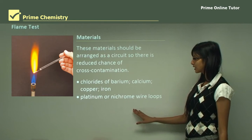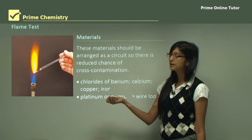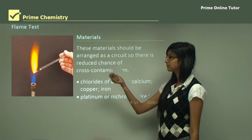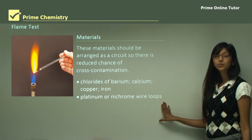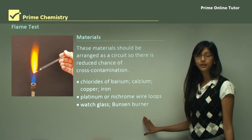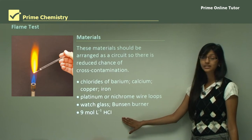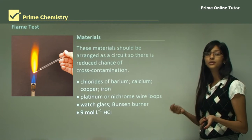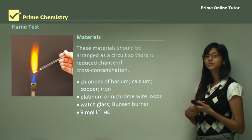We also use platinum or nichrome wire loops to place the sample in the flame, as you can see in the diagram — the person is holding a platinum or nichrome wire and placing it in the Bunsen burner flame. You also use a watch glass and a Bunsen burner for the flame, and hydrochloric acid, which is used as your cleaning agent to clean your nichrome wires between testing each different sample.